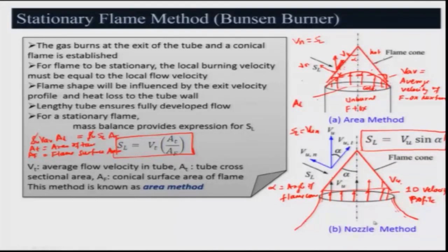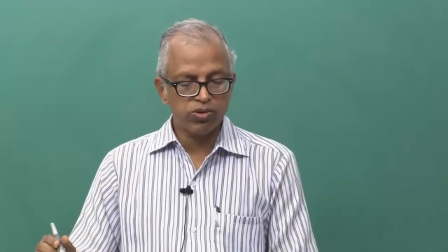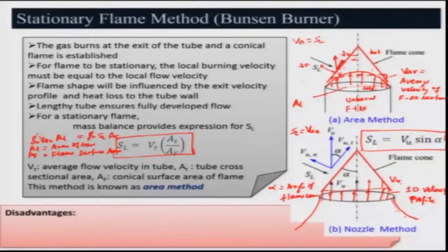So we can directly obtain the burning velocity by measuring the cone angle alpha. V_u is already known from the mass flow rate, density, and cross-sectional area of the nozzle. This nozzle method is superior compared to the area method, but the problem is that it can be used for only a limited range of fuel-air mixtures, because it is difficult to stabilize the flame in a nozzle as compared to a Bunsen burner. One must also be careful with PIV-based measurements to avoid reporting values inconsistent with known burning velocities.